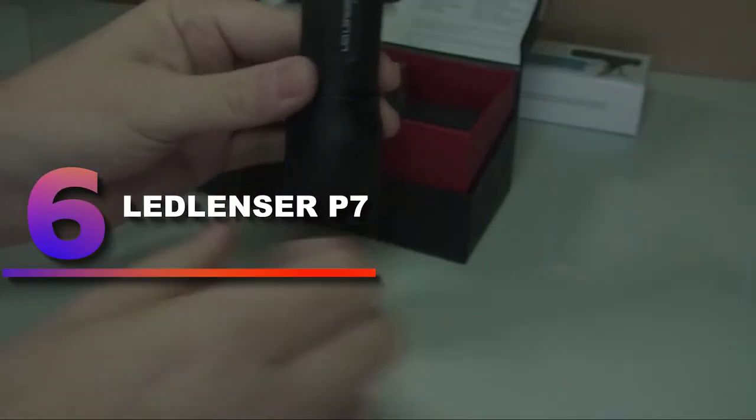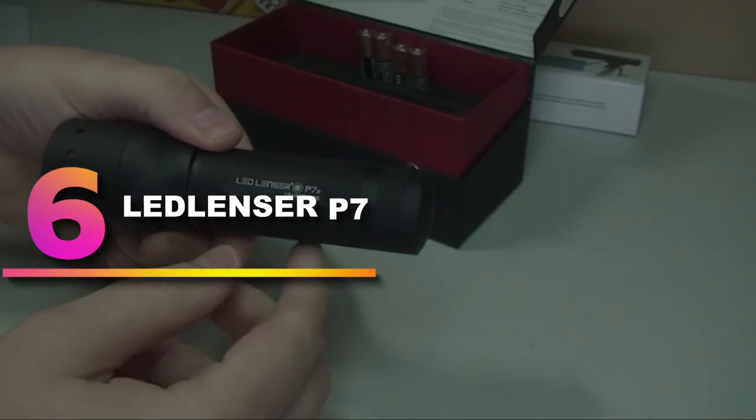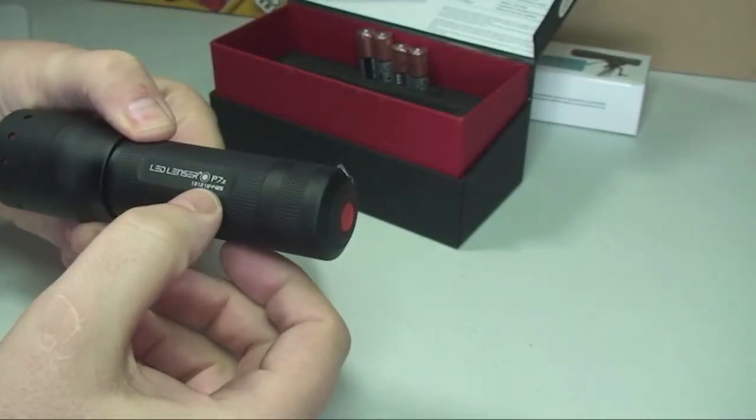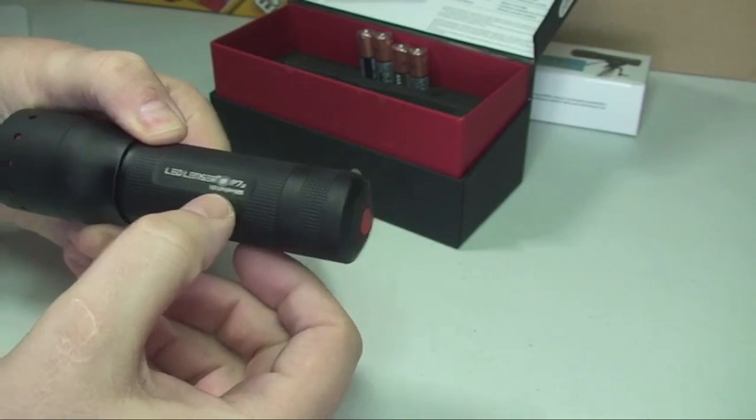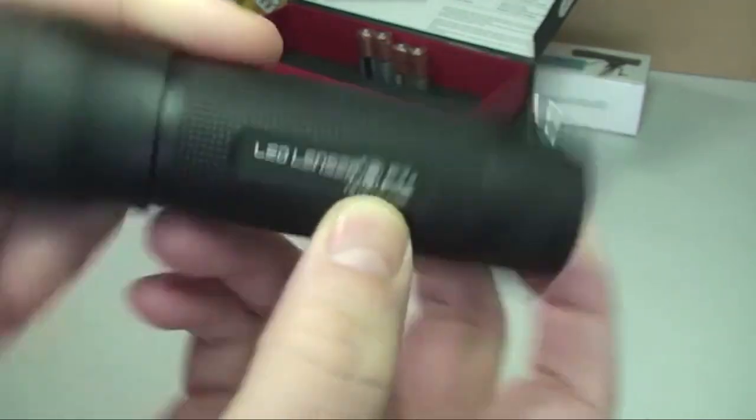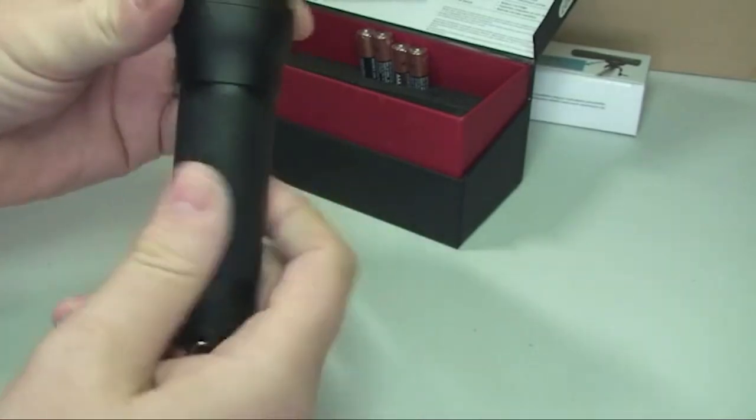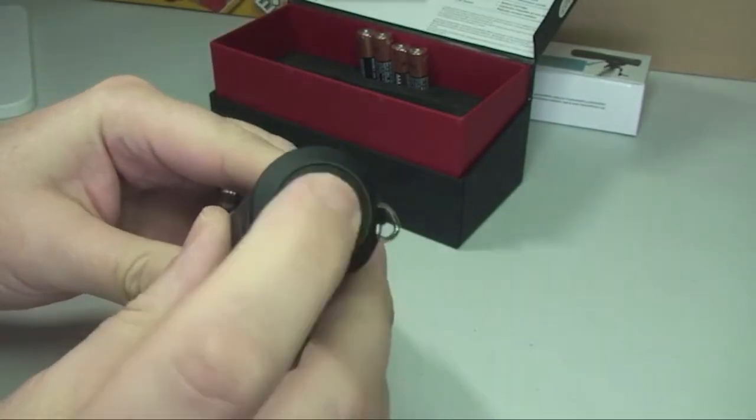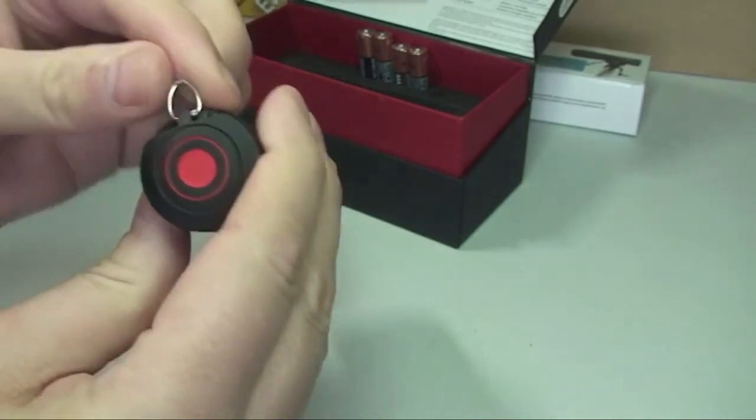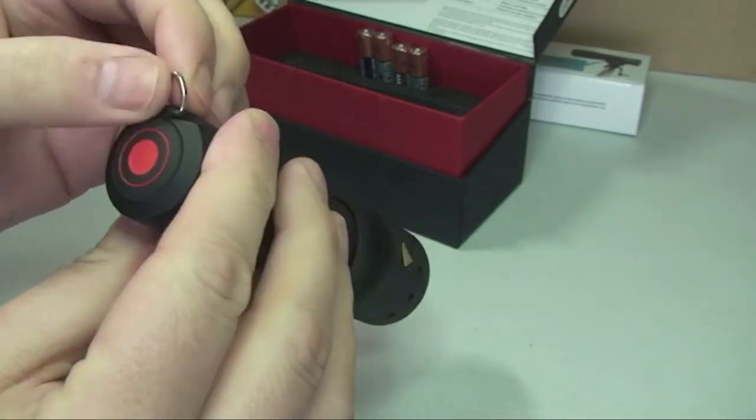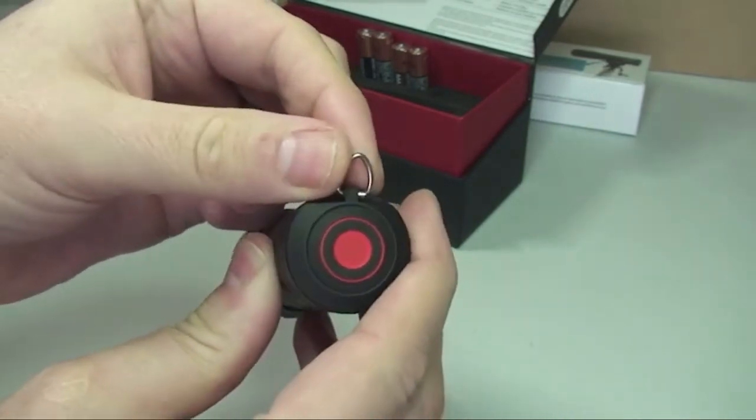Number 6: Ledlancer P7. Some hunters don't want to drop 100 bucks on a flashlight, and we get that. For those who are after a torch that won't break the bank, check out the Ledlancer P7. It's a solid all-around light with plenty of great reviews. There's nothing mind-blowing about the P7, but we dig it anyway.